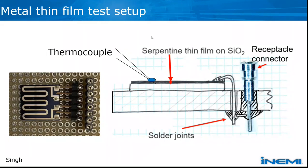The metal thin film test setup uses a silicon oxide on silicon die. On top of that we plate the serpentine thin film, attach a micro-wired thermocouple to measure the temperature of the conformal coating, and on the right side are electrical connections for four-point measurement. This photograph shows what the specimen looks like from the top - the whole thing is coated with the conformal coating and the corrosion rate of the thin film is measured in a corrosive gas environment.